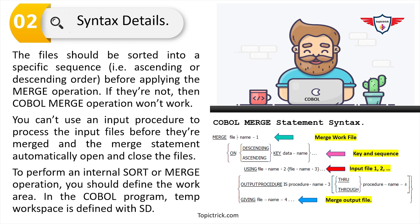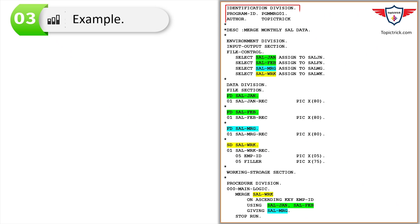You cannot use input procedures in the merge statement. If you want to perform an internal sort or merge operation, you need to define a work area. In a COBOL program, the work area or temporary file is defined with an SD statement in the file section of the data division. Now let's move to the example section — here's a sample program that merges data from two separate identical files holding employee salary data for January and February months.